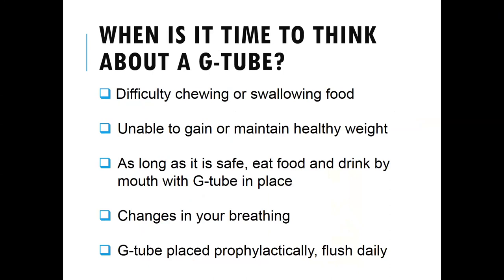Combining trouble chewing and swallowing with hypermetabolism can make it very difficult to maintain weight. We think of a feeding tube as something to help slow weight loss. Some research has shown a correlation between higher body mass index — your weight relative to your height — and slower disease progression. So weight is very important, and we try to slow weight loss as much as we can.